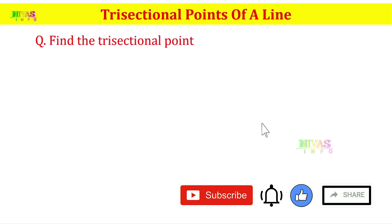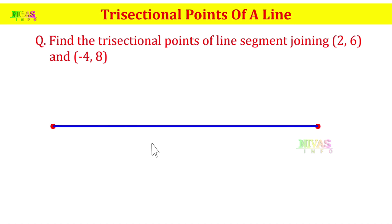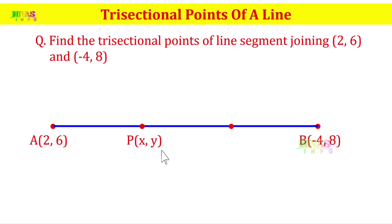Find the trisectional points of a line segment with coordinates (2, 6) and (-4, 8). We have coordinate values for two points. In this line segment we have three equal parts. We have to find out the two points' coordinate values. I have point A and point B. This is the section formula applied two times.